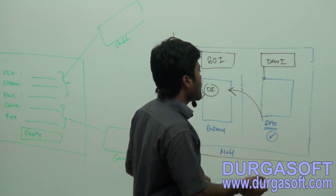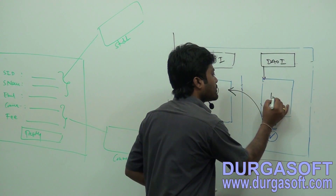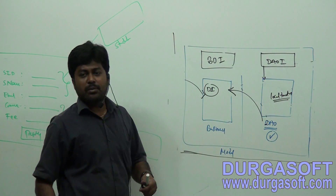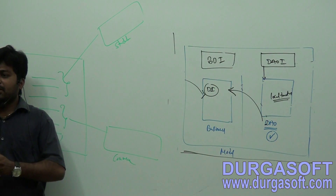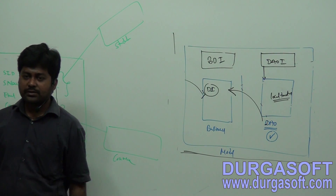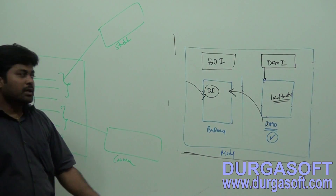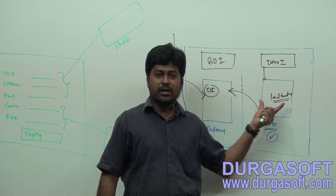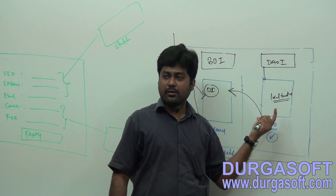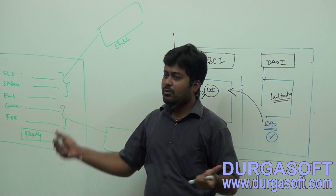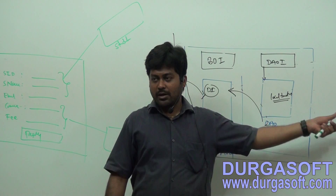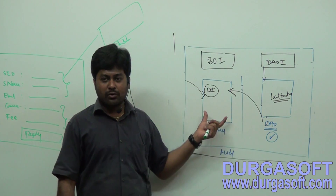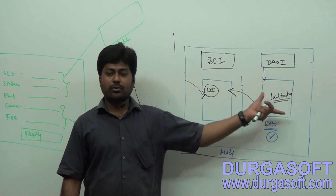DAOs can have local transactions. Here DAOs can apply local transactions, but from business you need to apply global transactions — meaning it needs to operate multiple DAO classes from business itself. Locally, local CRUD operations it can commit or it can roll back. Whenever you pass student data, student DAO can save or roll back. Whenever you pass course data, course DAO may commit or roll back. But from one business, if you want to deal with two DAOs, that commit or roll back business needs to do — not DAOs.